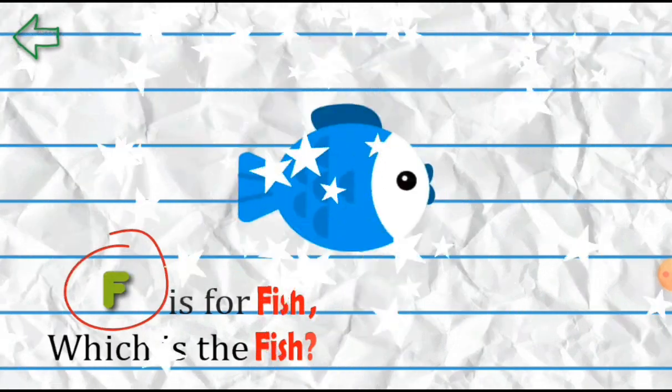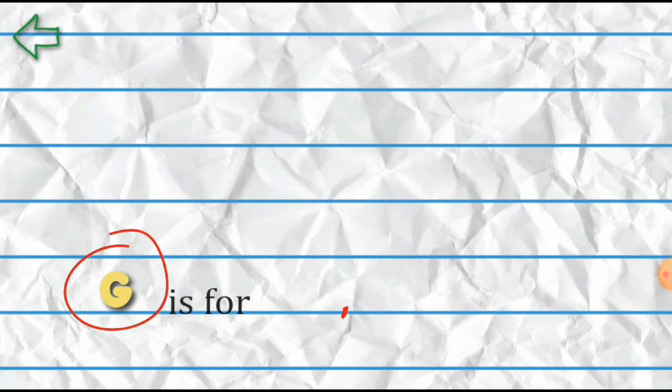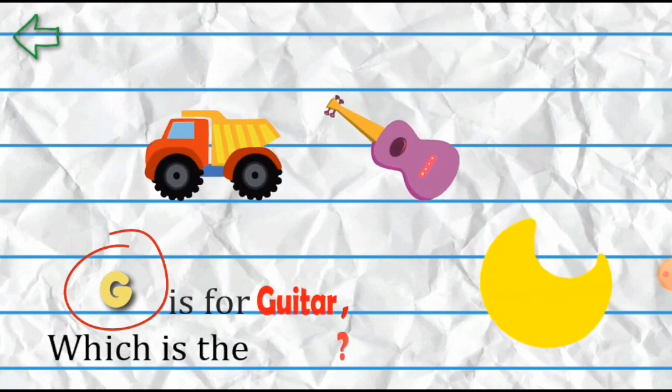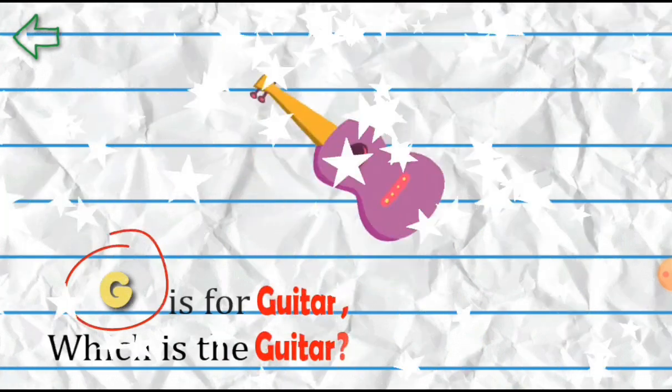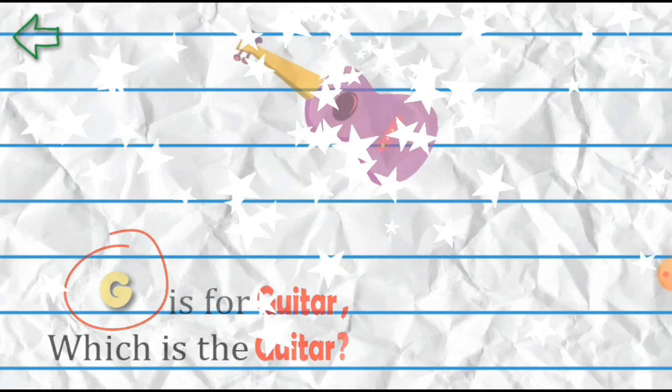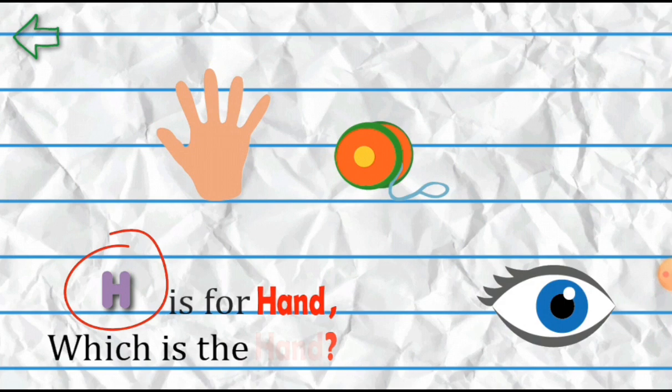G is for Guitar. Which is that? Guitar. H is for Hand. Which is that? Hand.